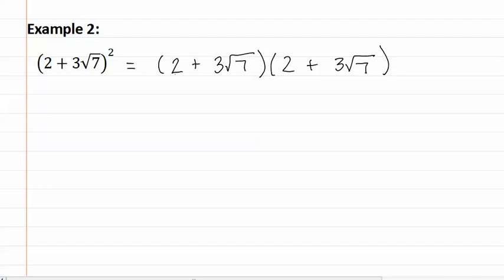And now we'll FOIL: two times two is four, two times three square root seven is plus six square root seven. Again for the middle term is plus six square root seven and for the last term is plus nine square root seven squared.